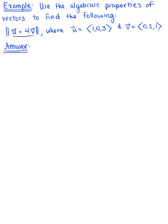The first thing we need to do is find the components. We'll use vector arithmetic here. We need to take the sum of vector u with 4 times that of vector v. Plugging in what we're given, we have the vector <1, 0, 3> plus 4 times the vector <0, 3, 1>.